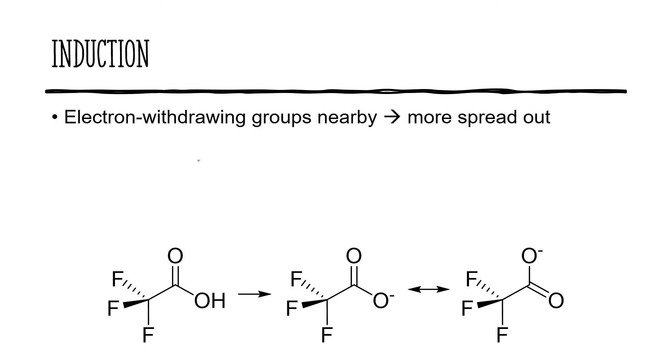The third factor to consider is induction. Normally you're going to be considering electron withdrawing groups that are nearby. This is very similar to the conjugate base having a helpful neighbor. And this helpful neighbor is going to stabilize the conjugate base. Let's take a look at a very similar molecule to the one that we saw in the previous example. The difference here is we have a trifluorinated version of it. So that's going to be super, super electron withdrawing.